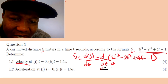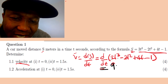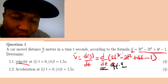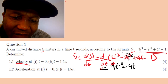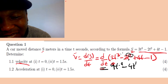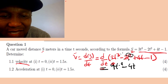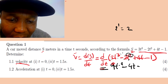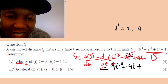3 times 3 equals 9, so we get 9t. Then 3 minus 1 equals 2, so the power becomes 2: giving 9t². Next, minus 2t²: differentiate — 2 times 2 equals 4, write t, and 2 minus 1 equals 1, so it's t to the power 1, which is just t. So we have minus 4t. Then plus 4t: differentiate that next.